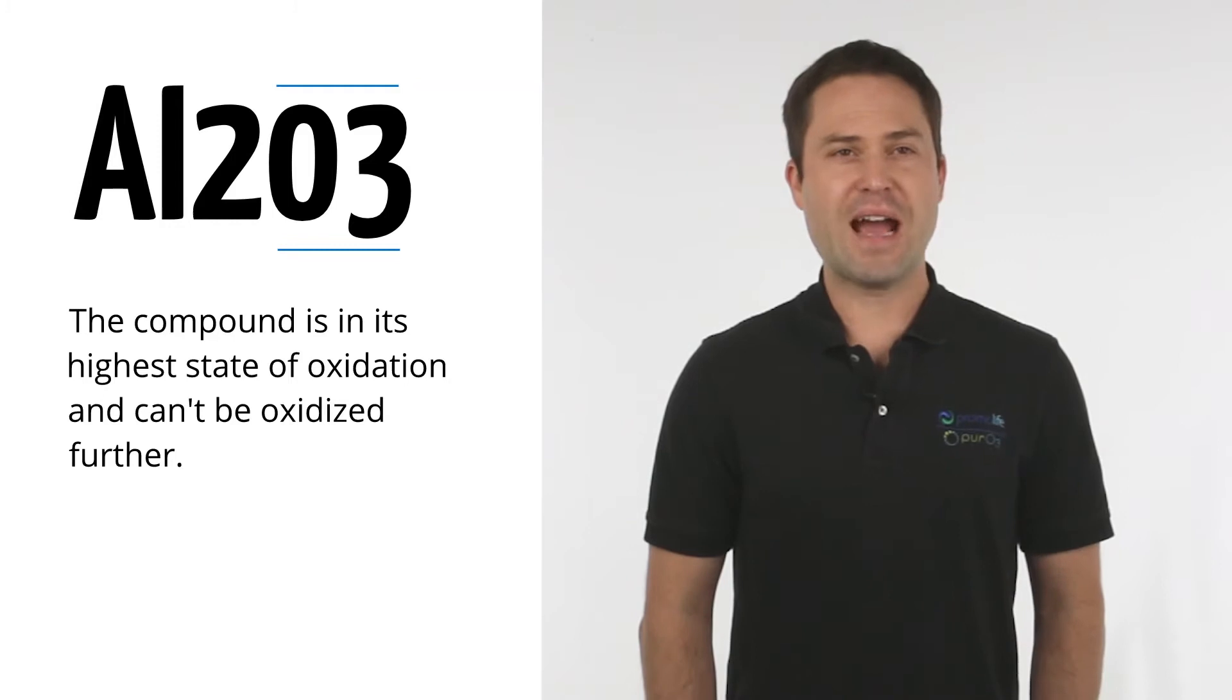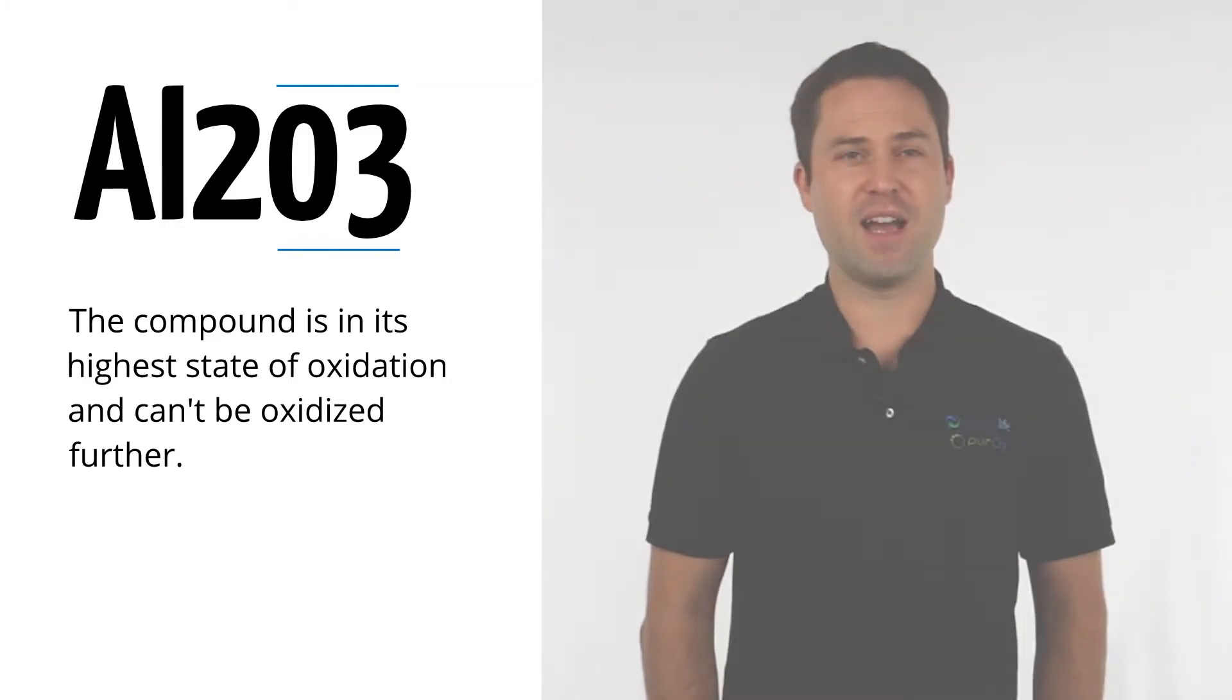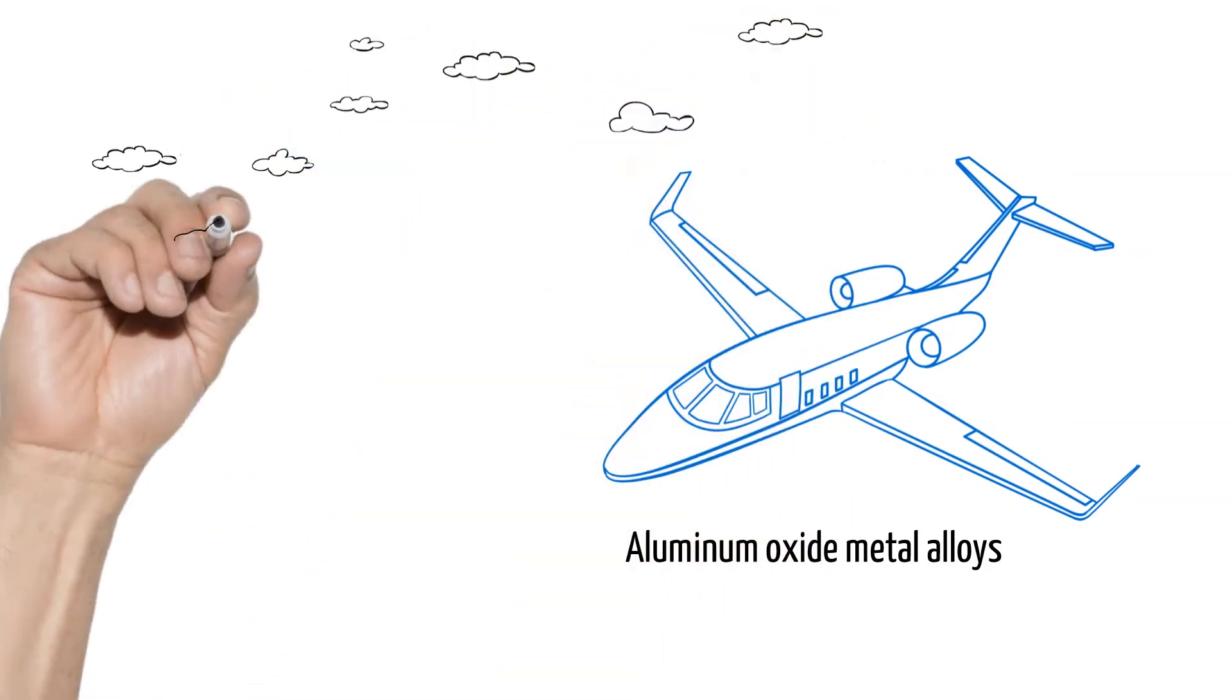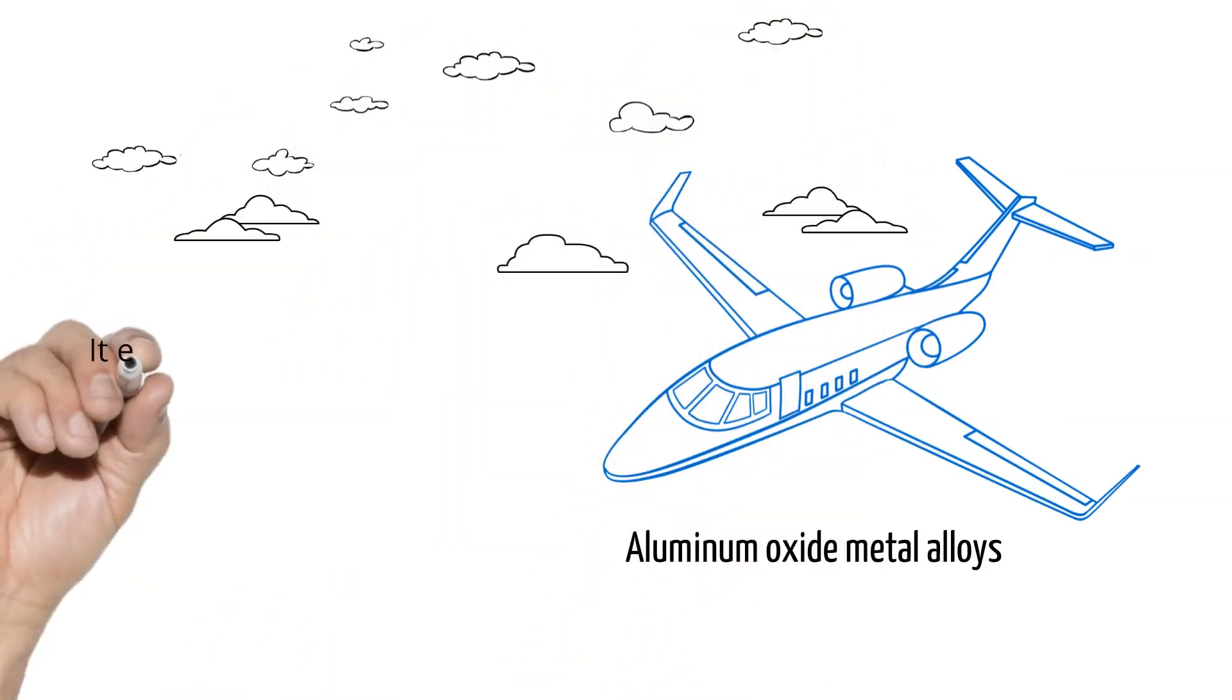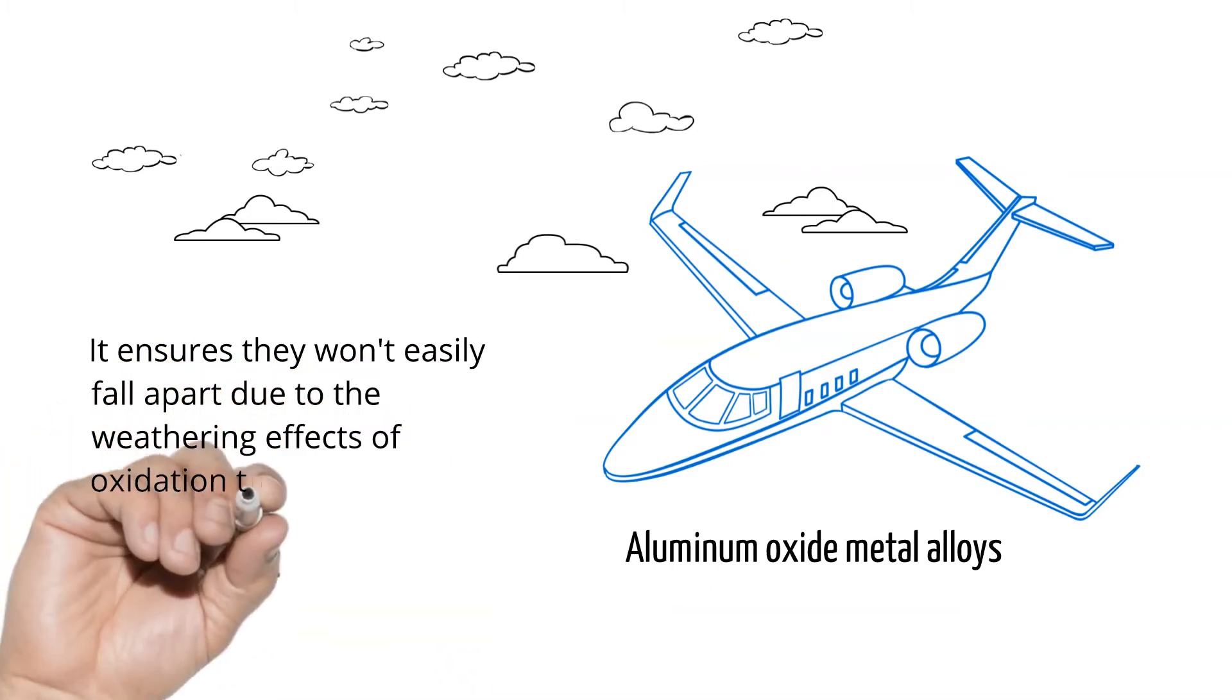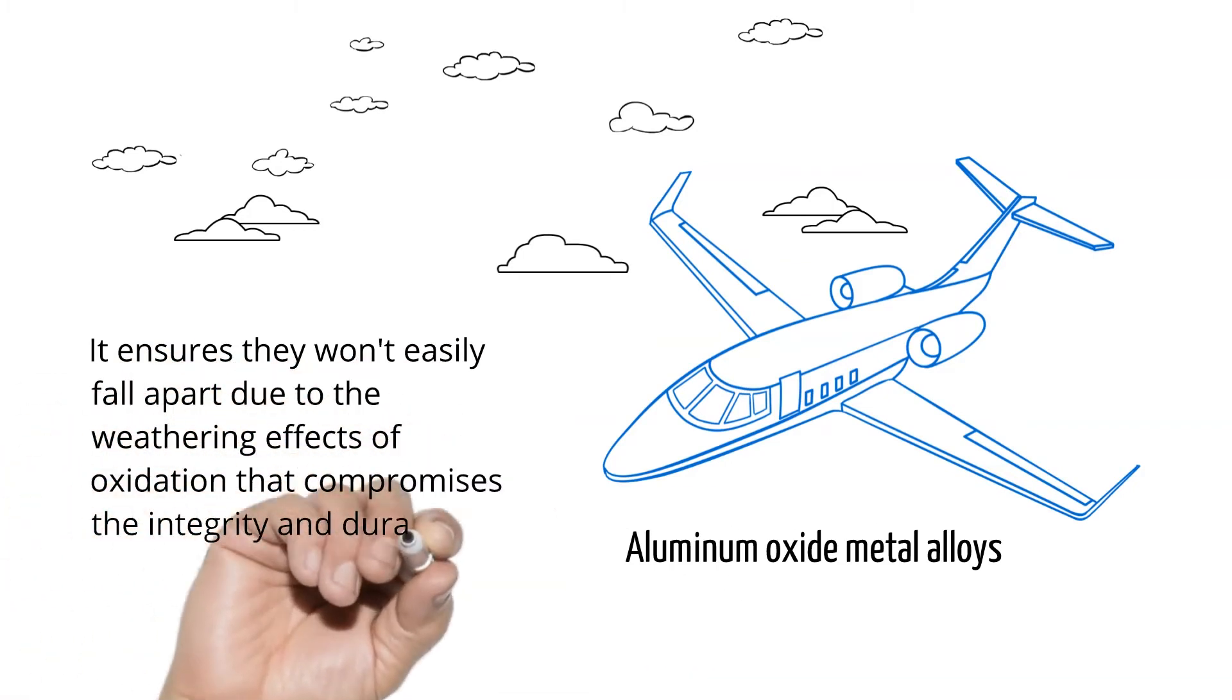It is one of the most inert, naturally occurring compounds and has a durability second only to diamonds. This is why most airplanes and jets are constructed of aluminum oxide metal alloys. It not only keeps the planes lighter, it also ensures they won't easily fall apart due to the weathering effects of oxidation that compromises the integrity and durability of other metals. A cell made with these materials has a very long lifespan, which is why our ozone cells have a lifetime guarantee.